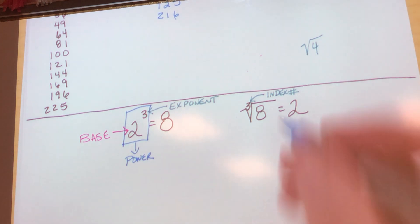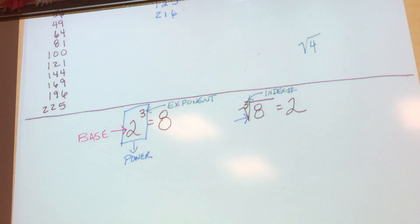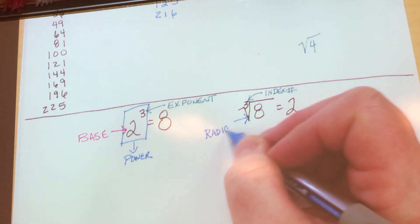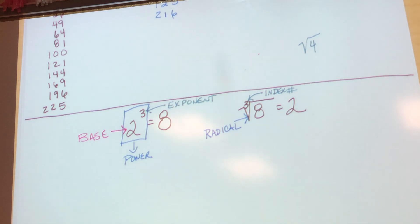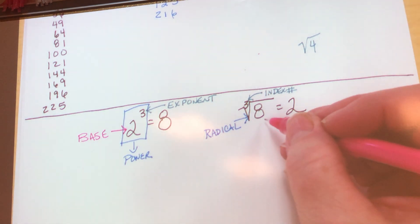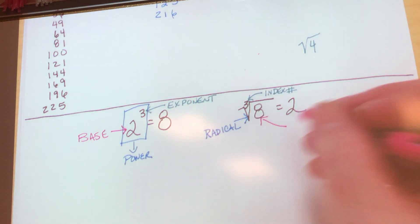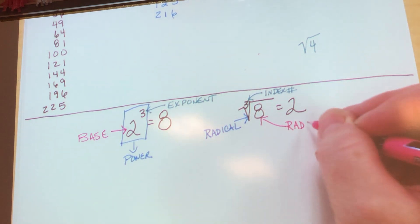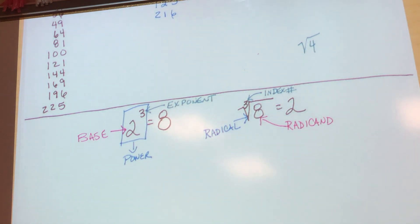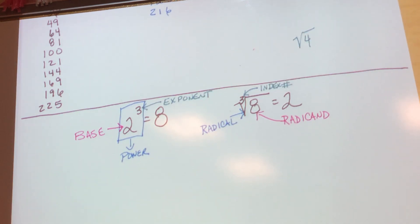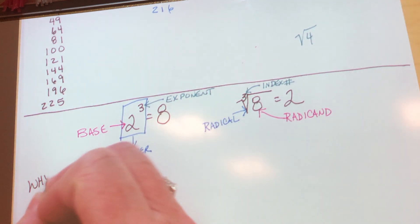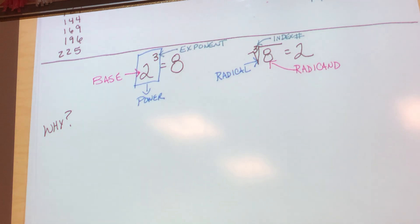What about that little symbol? That's called a radical. And the number underneath the radical — the 8 in this case — is called the radicand. So why are we doing all this? So we know the vocabulary. When I start using those words, you'll know what I'm talking about.